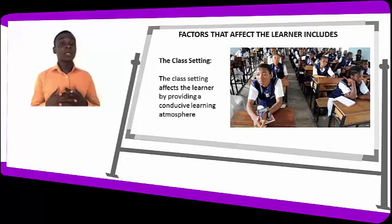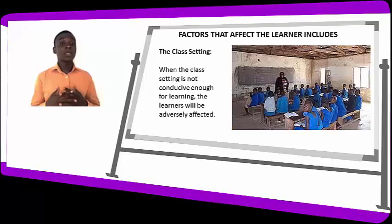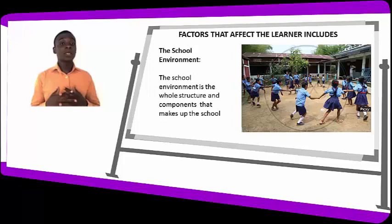The second factor that affects the learner is the class setting — a designed and structured place which allows for and where learning takes place. The class includes the lighting, ventilation, convenience, and decoration. The class affects the learner by providing a conducive learning atmosphere.